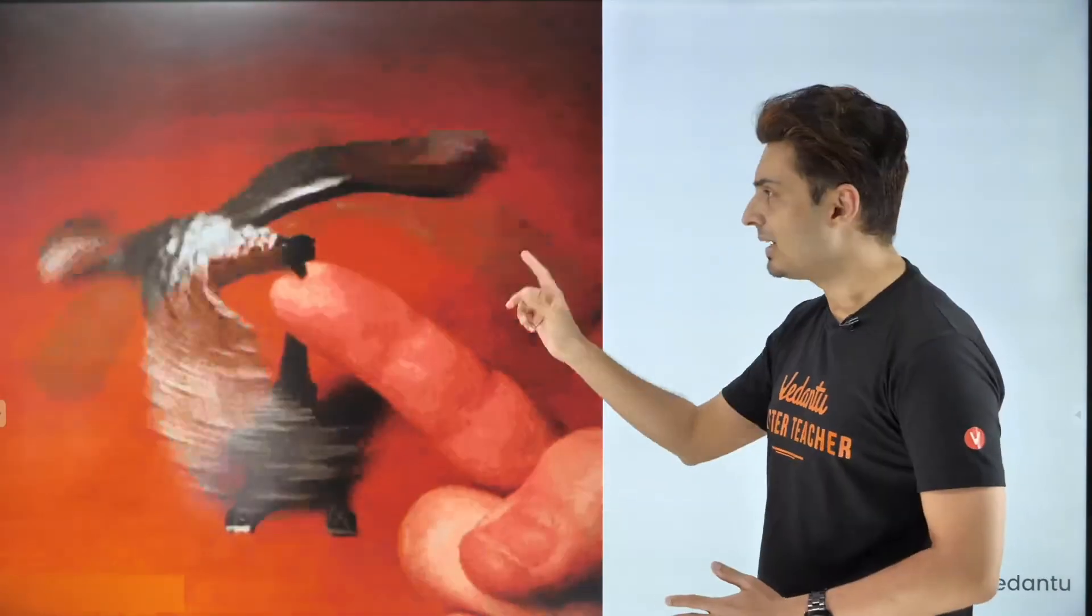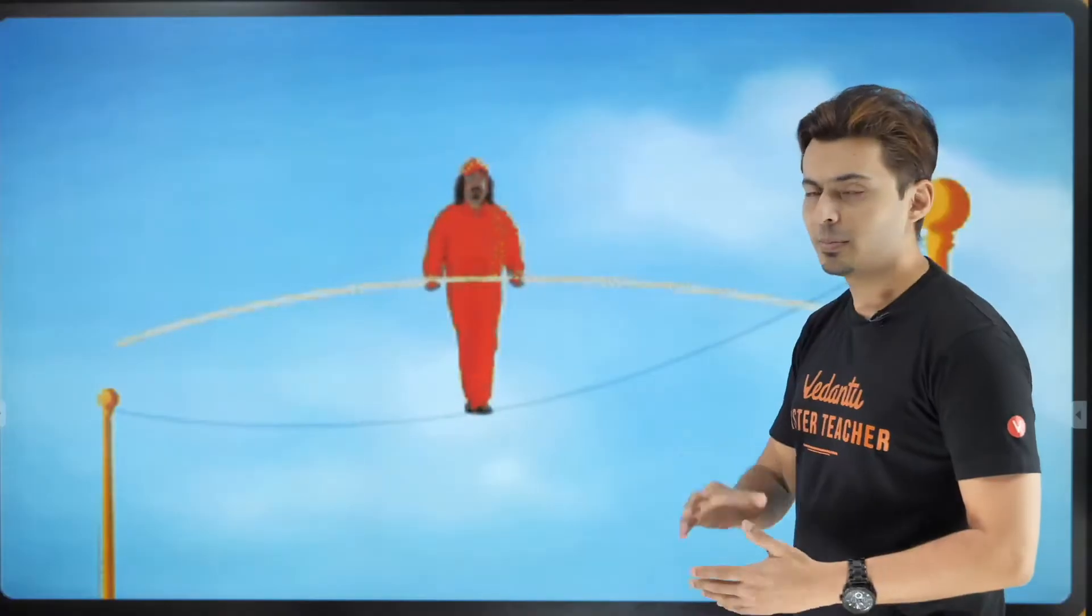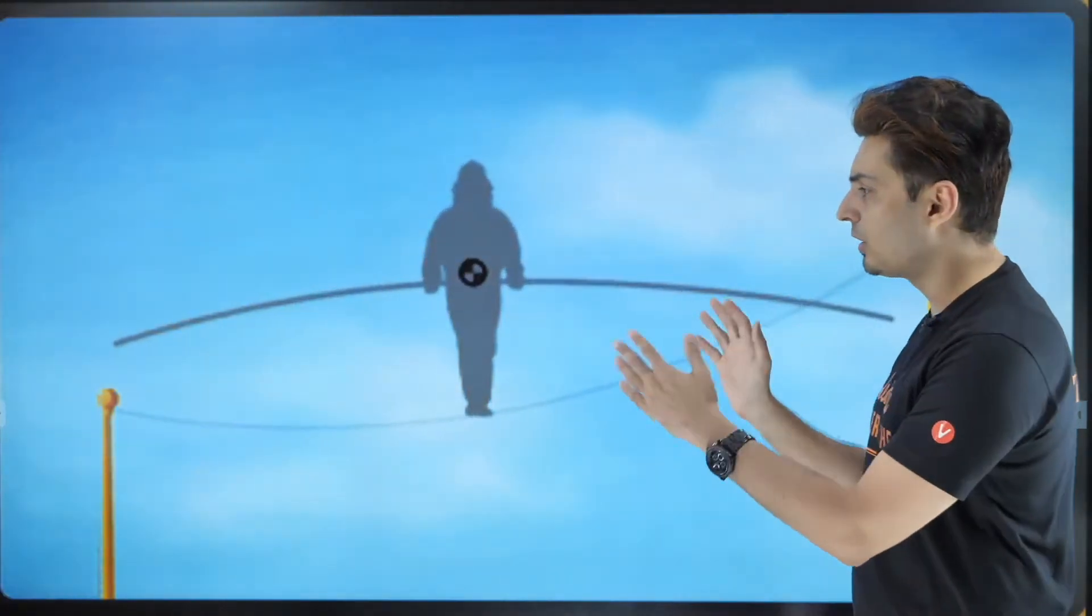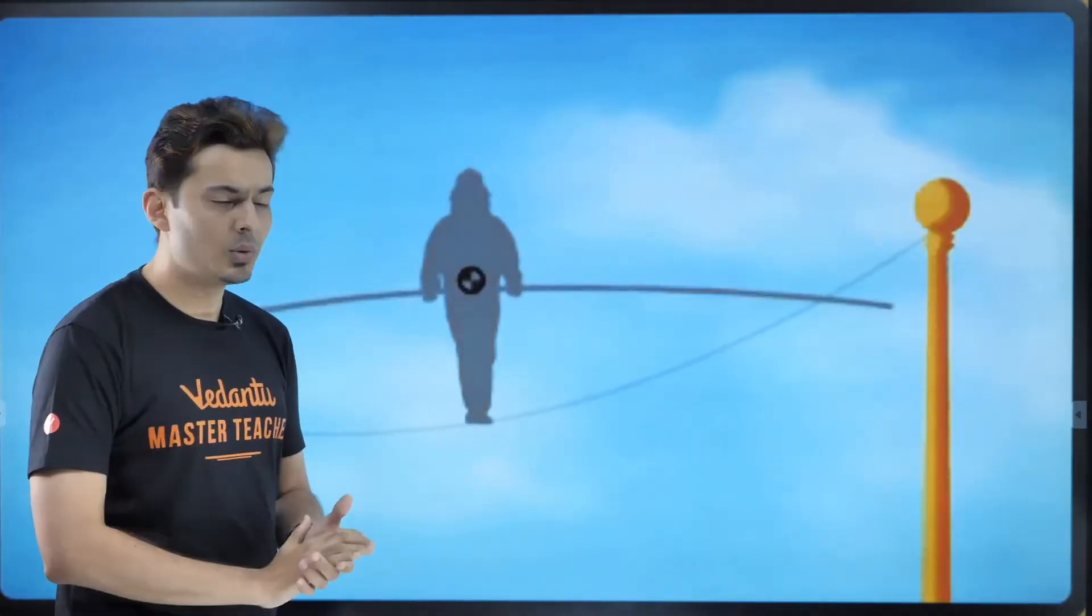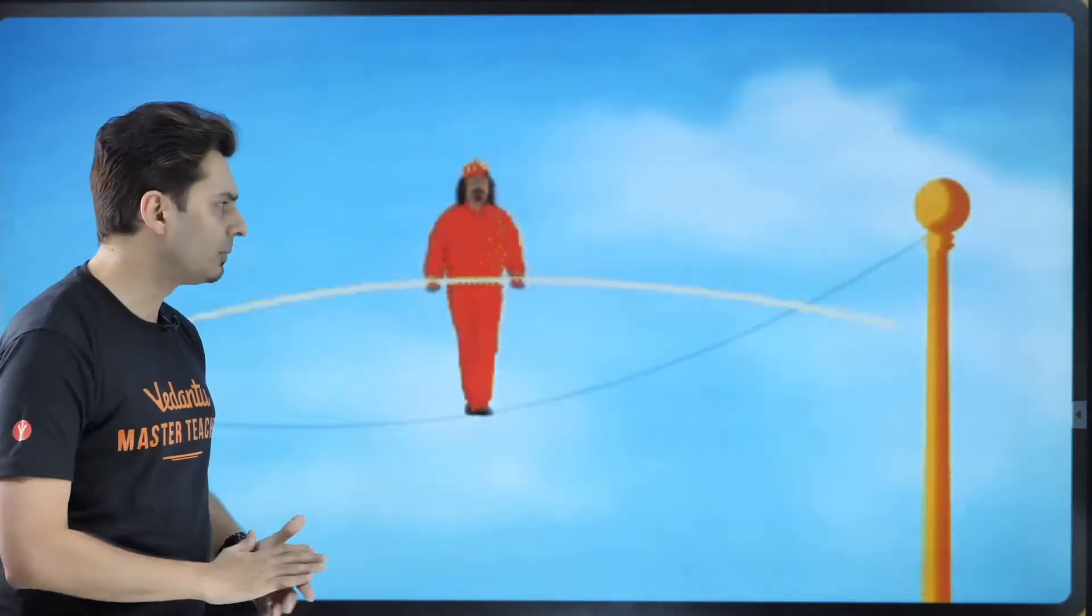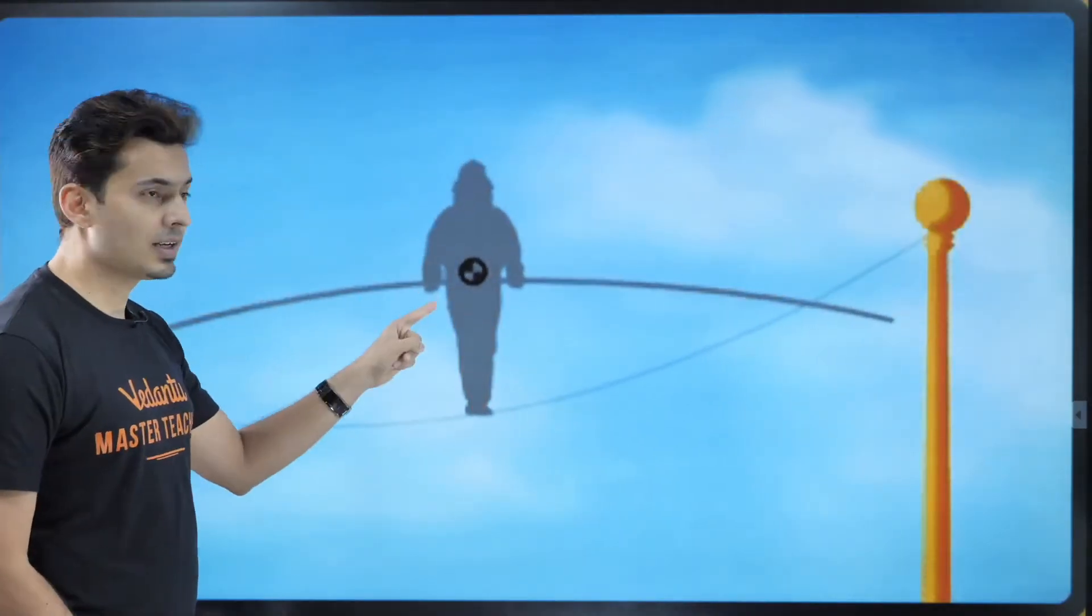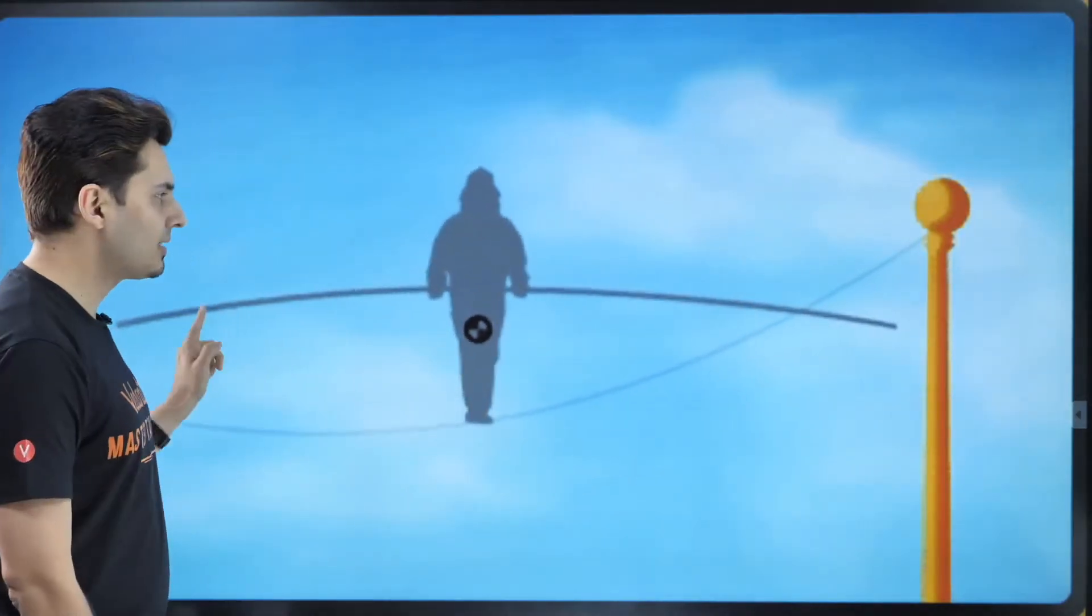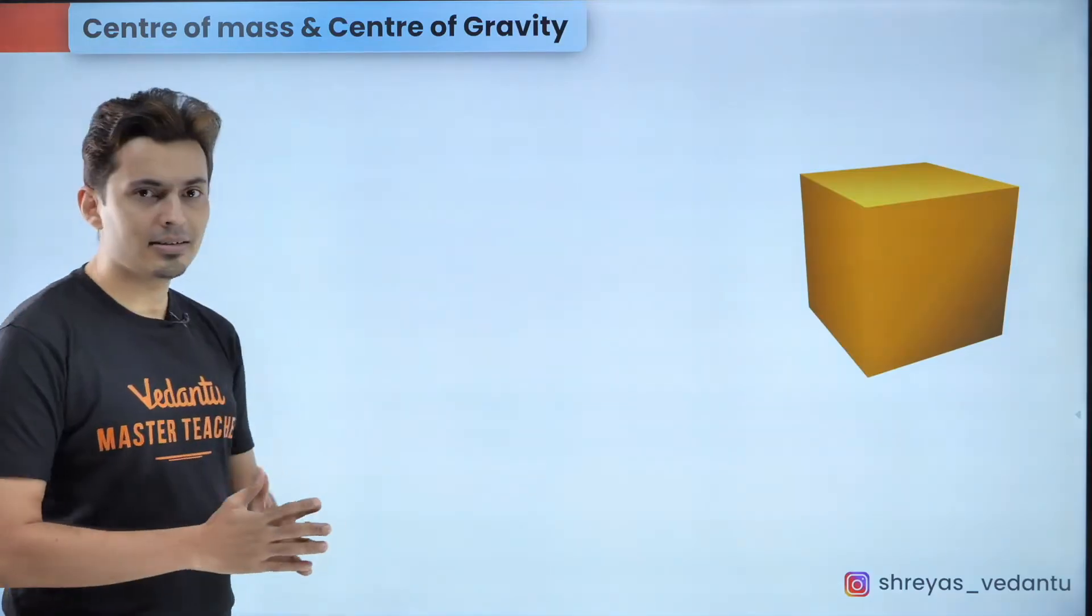Now most of you would have seen this balancing bird toy and you would have seen that it balances itself no matter how you try and disturb it. The concept behind this as well as the concept behind a person trying to walk on a rope using a stick is very similar. All they are trying to do is try and keep the center of mass in the vertical line above or below the pivot and try to maintain the center of mass as low as possible. Now what exactly is center of mass?